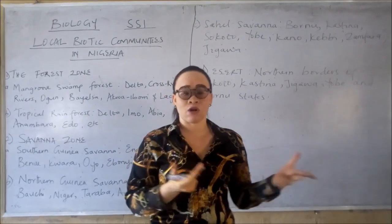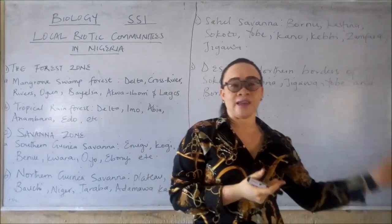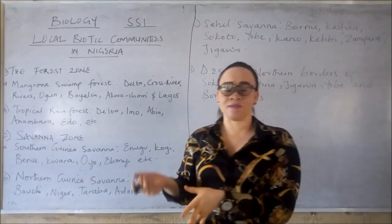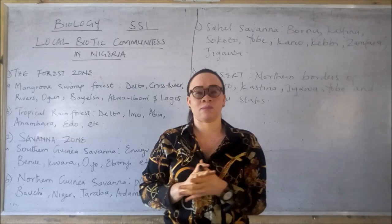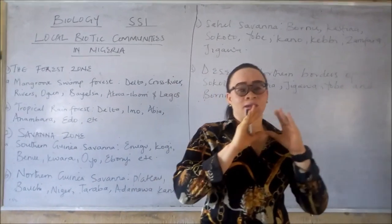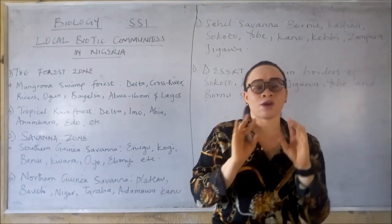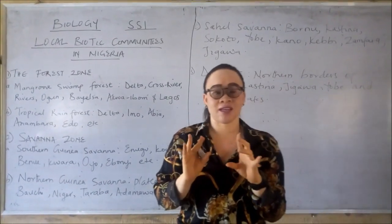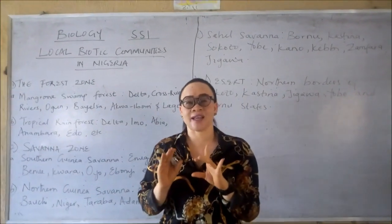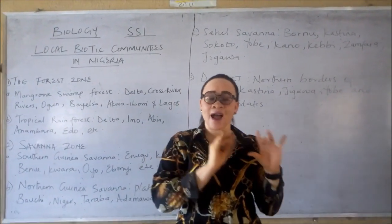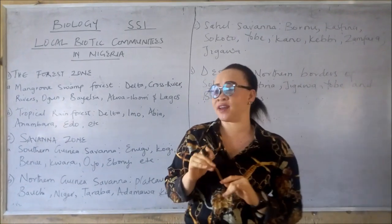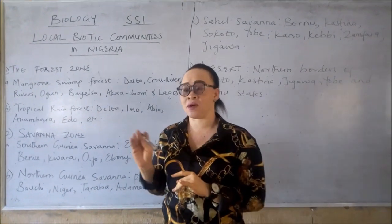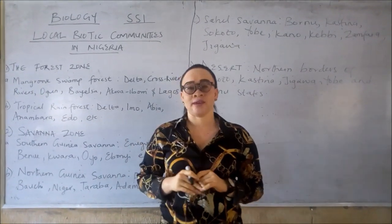In states like Delta, Cross River, Lagos, Rivers State and all the rest of them. Now the mangrove swamp forest is characterized by a high rainfall of about 250 cm per annum.